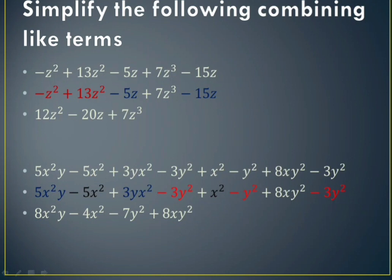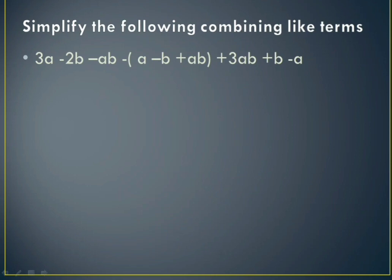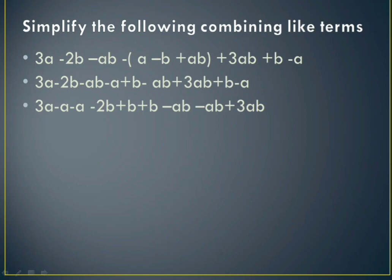Next: simplify the following by combining like terms. We have a negative sign in front of a bracket, so when I remove the bracket all signs of terms inside will change. Copying the rest: 3a is copied, minus 2b, minus ab. Then the sign changes: a becomes negative, b becomes positive, ab becomes negative — the rest is copied. Now writing like terms together: 3a and minus a and minus a; then minus 2b, plus b, and plus b; then minus ab, minus ab, and plus 3ab.